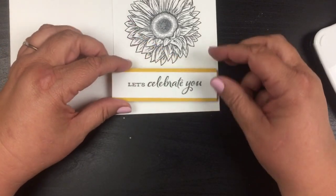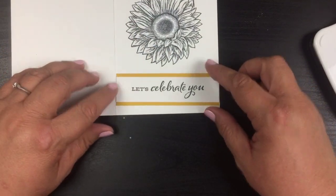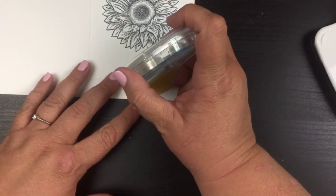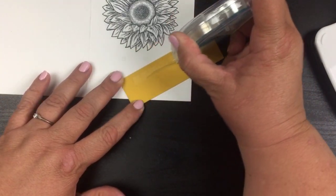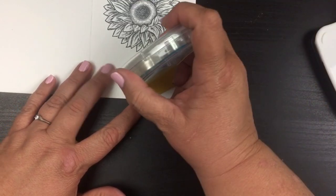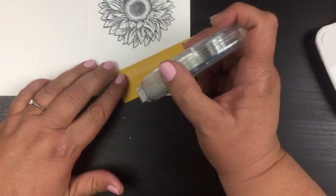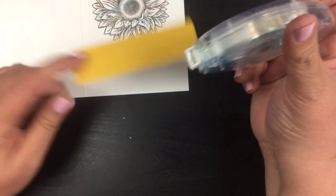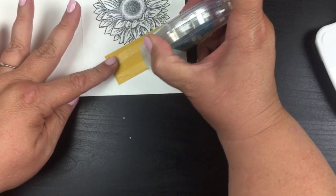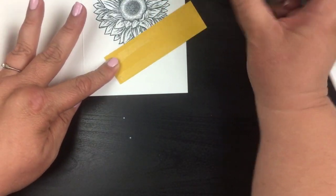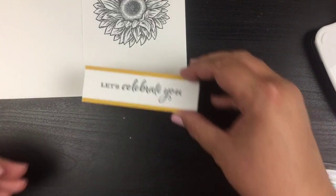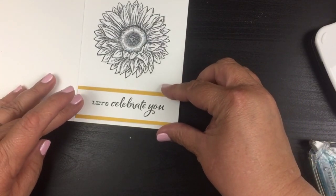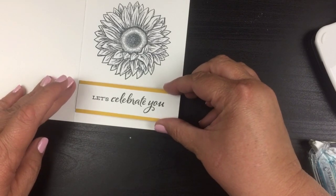We're gonna do this let's celebrate you and we will again put this down with the stamp and seal, just a light hand. You don't need to be heavy-handed on this at all. We're just gonna line this right up. I'm gonna make it a little bit higher. There we go.